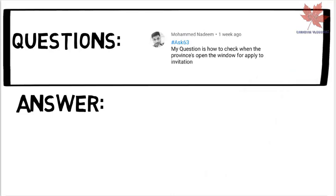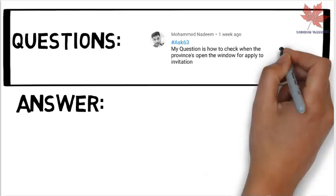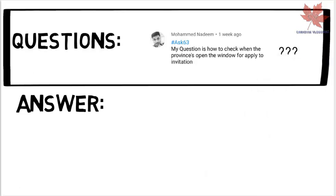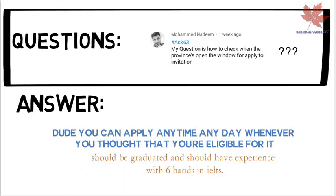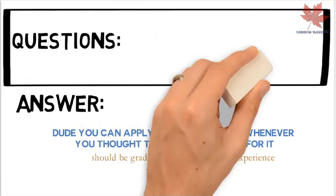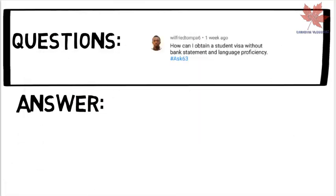Next question is from Nadim: how to check which provinces have open windows to apply for invitation? I think you're asking about provincial immigration programs. You can apply anytime when you feel you're eligible. You should be graduated, have work experience, and have 6 bands in IELTS.